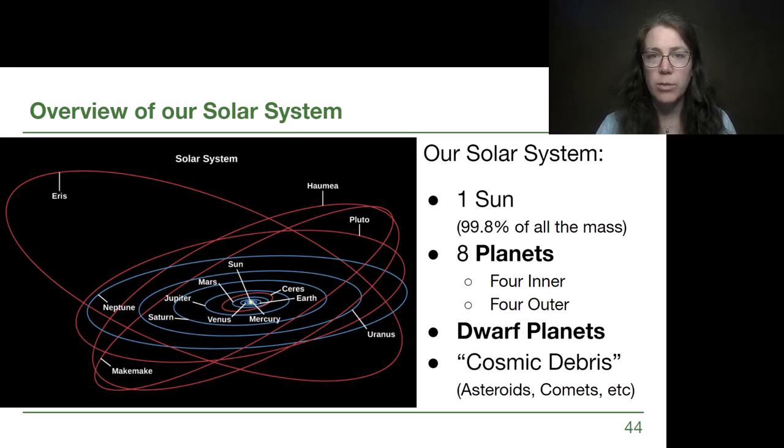When we think about our solar system, if we were to pack it all up in a box and label the contents, we would have one single star. That's the Sun. The Sun is the name of our star, and it contains 99.8% of the mass that we refer to when we are talking about the solar system. There are eight planets in our solar system, four inner planets and four outer planets.